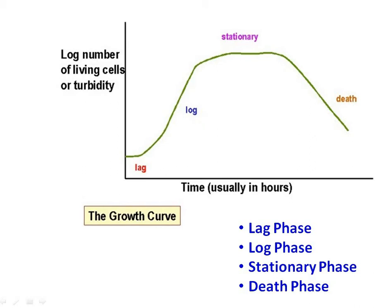The second phase is the log phase, or exponential phase. Here the cells are growing at a constant rate — that is, the generation time is constant. This is the only phase when the population is growing at a constant rate, and it presents the maximum rate and minimum generation time for the prevailing conditions.